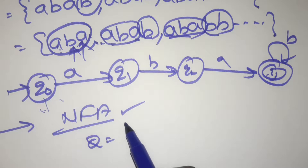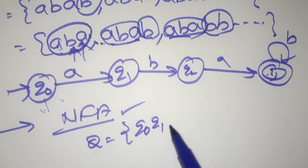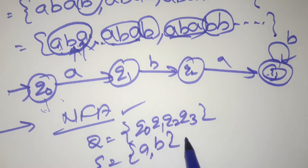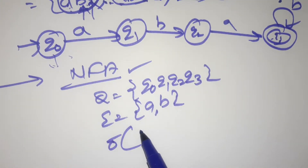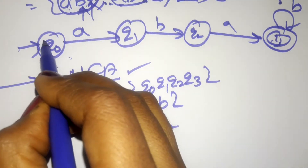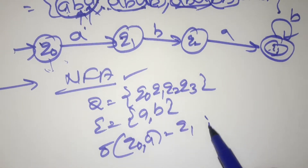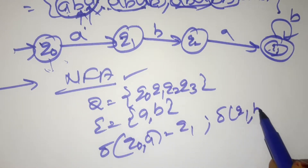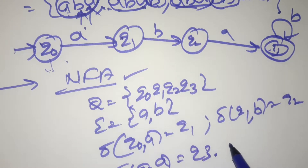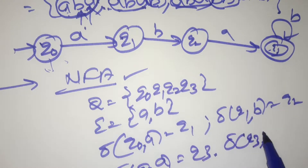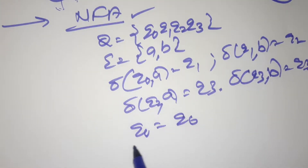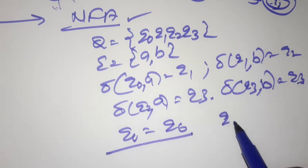The formal definition: Q = {q0, q1, q2, q3}, sigma = {a, b}. The transition function: delta(q0, a) = q1, delta(q1, b) = q2, delta(q2, a) = q3, delta(q3, b) = q3. The initial state is q0 and the final state is q3.